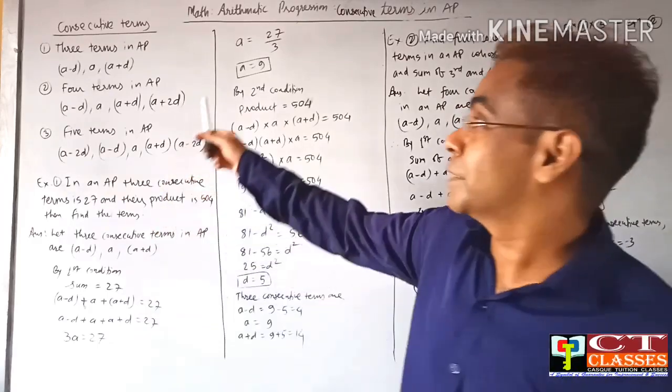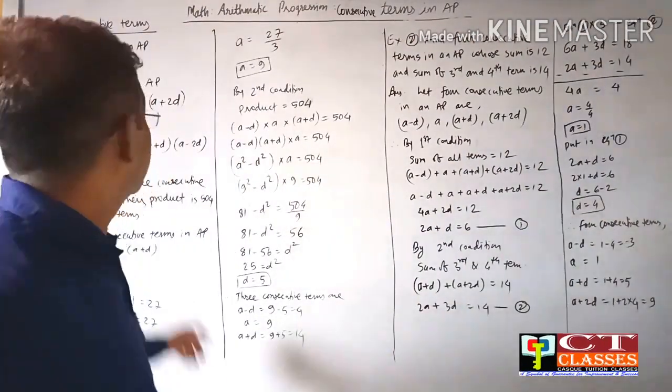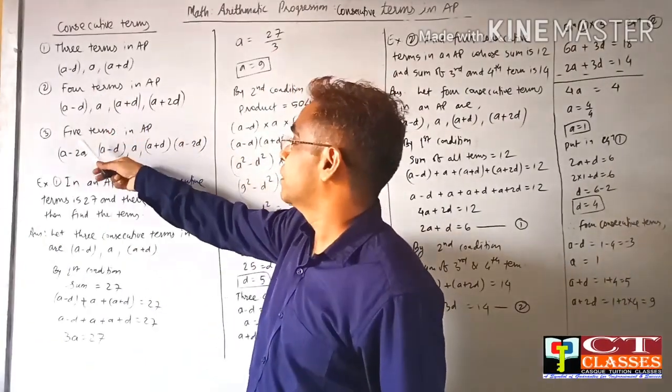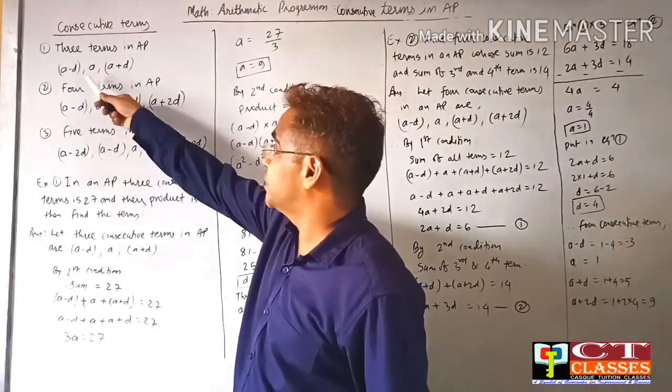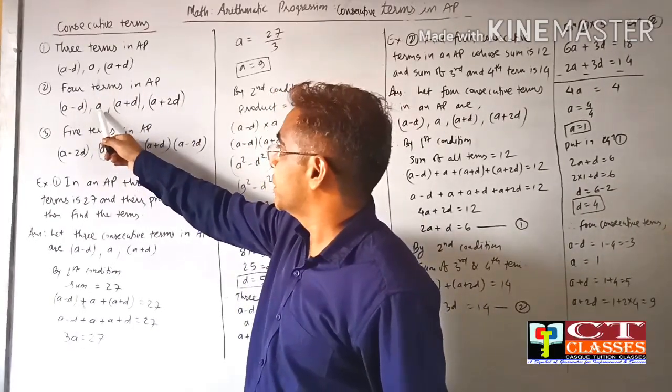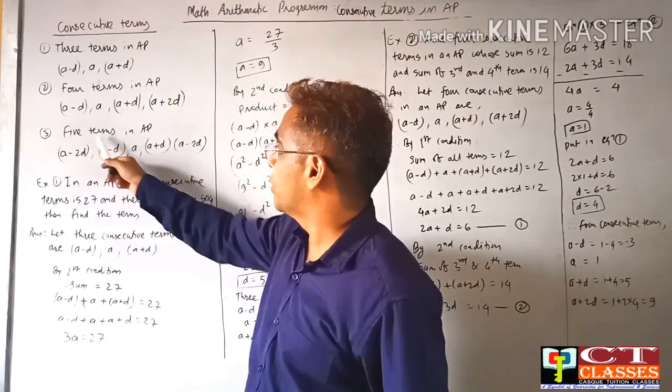Consecutive terms: 3 terms in AP are written as a-d, a, a+d. 4 terms in AP: a-d, a, a+d, a+2d. 5 terms: a-2d, a-d, a, a+d, a+2d.